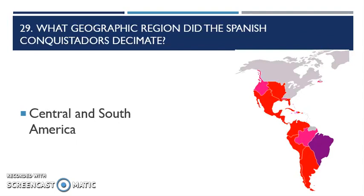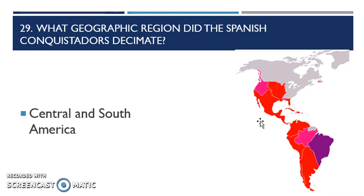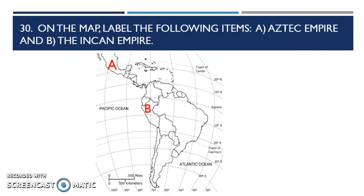Question 29: what geographic region do the Spanish conquistadors decimate? Decimate means destroy. All the red on the map is the Spanish, and that is the areas where they're going to be in contact with — pretty much the areas they kind of destroy. Most of it is because of the disease factor, and then the brutal treatment of the Spanish conquistadors on the native people is another reason. So Central and South America. When you worked in the silver mine and you were a native, about seven years was your life expectancy. On the map, you have to label the Aztec Empire and the Incan Empire.